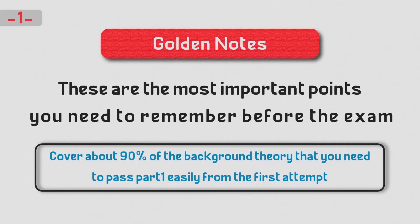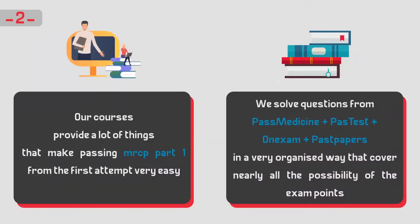Staphylococcus aureus is the most common cause, followed by Pseudomonas aeruginosa, which is more common in intravenous drug users. Salmonella species is the commonest cause in patients with sickle cell anemia. Pasteurella multocida is seen in cases caused by cat and dog bites.